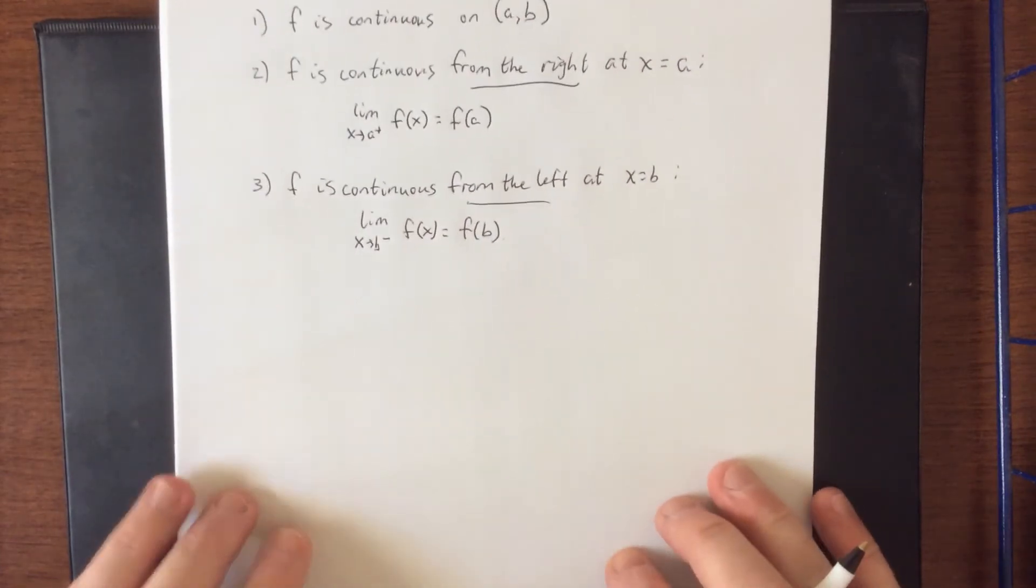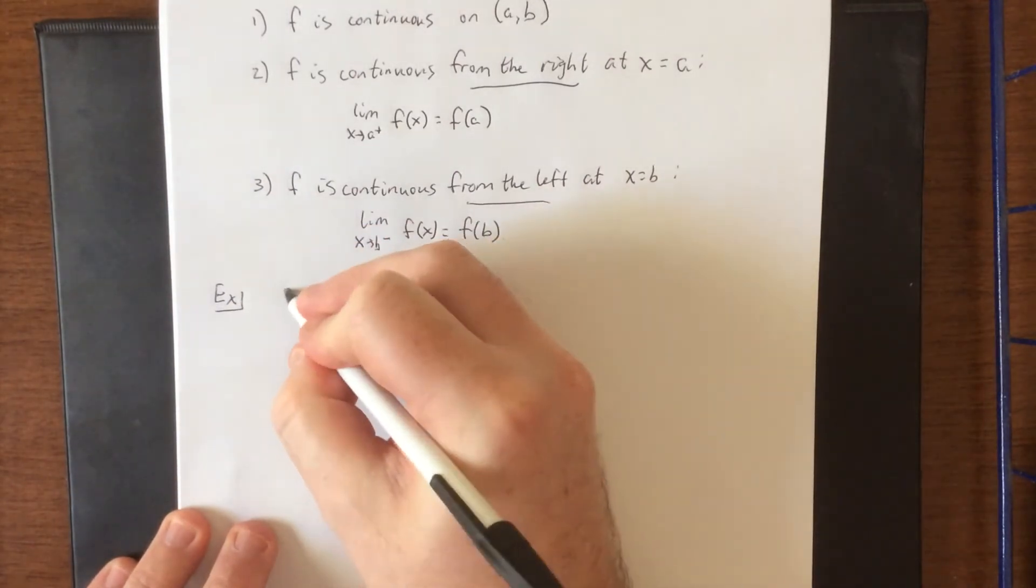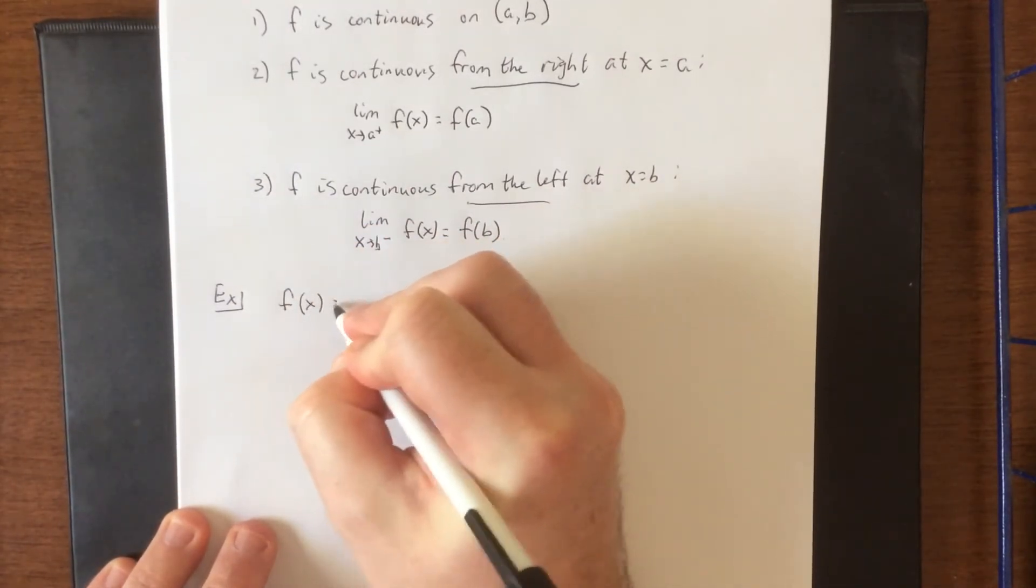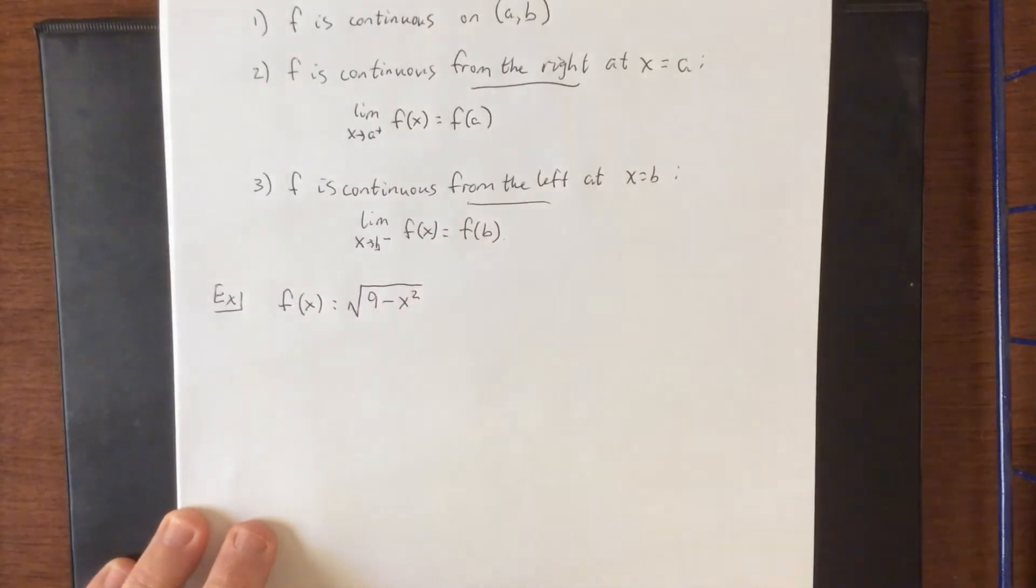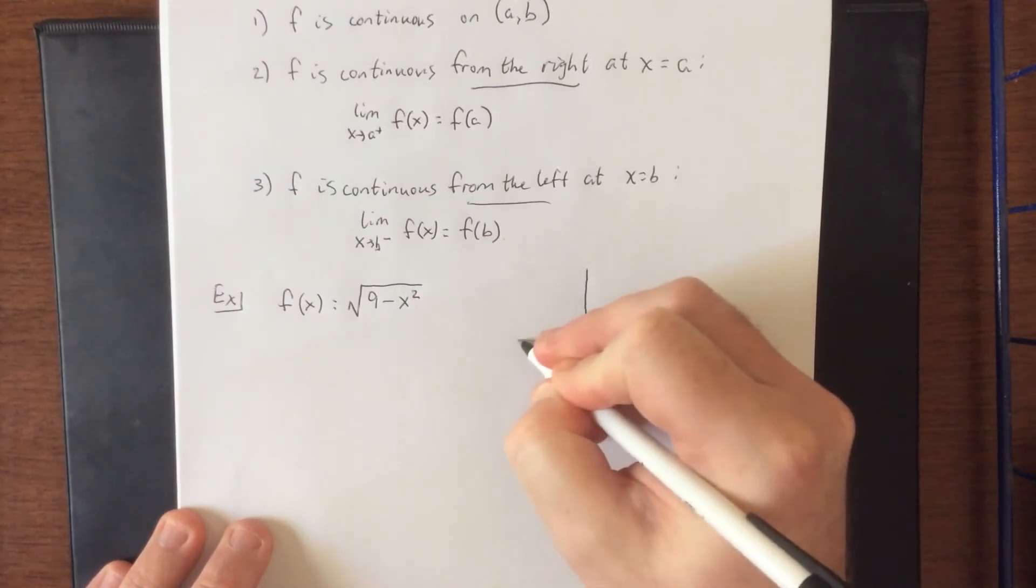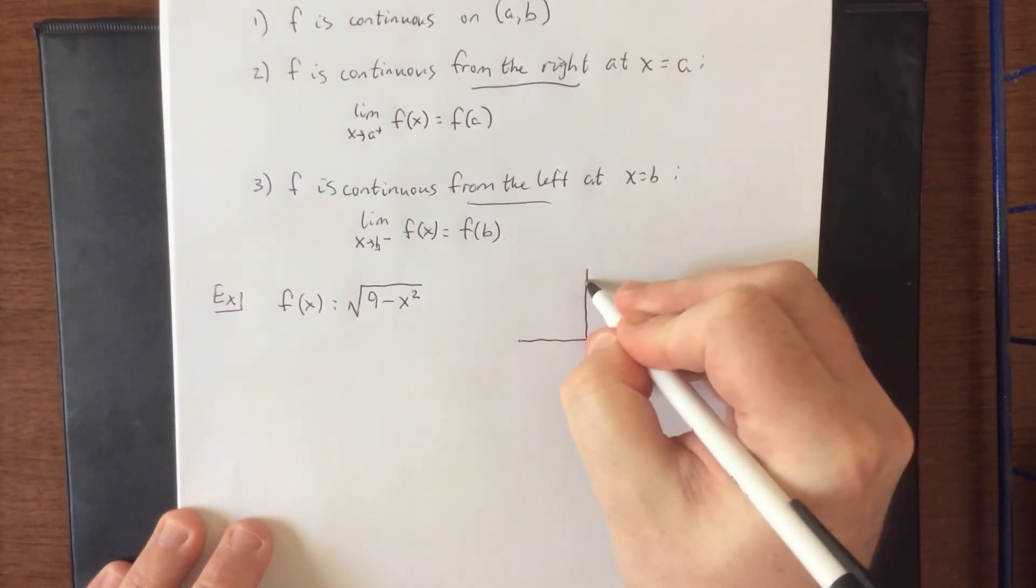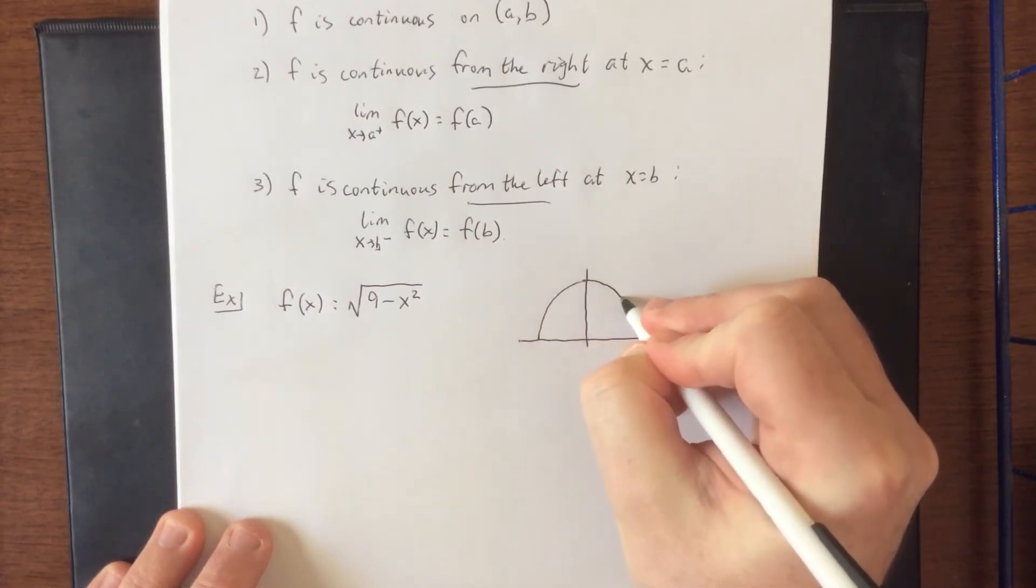Now an example of where continuity on a closed interval might come into play: consider the following function f(x) equals the square root of 9 minus x squared. For those that have observed things like this before, this would represent a semicircle centered at the origin of radius 3.